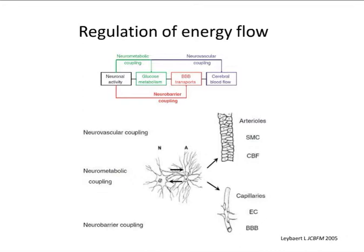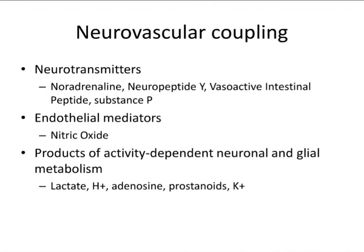A very important concept is the regulation of energy flow — the interplay between vascular, metabolic, and the blood-brain barrier. There is neurovascular coupling regulated by vessels, neuro-metabolic coupling regulated by the interplay between astrocytes and neurons, and neuro-barrier coupling involving transporters in the brain. For neurovascular coupling, there are several neurotransmitters including nitric oxide, as well as products of activity-dependent neuronal and glial metabolism including lactate.